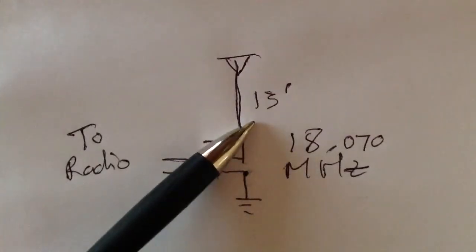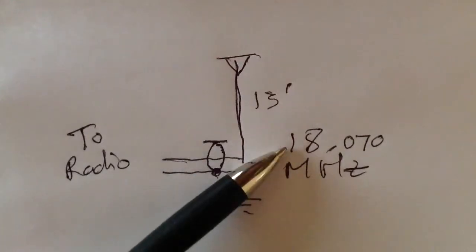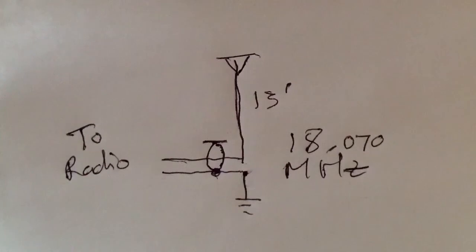The whip extended to 13 feet tall, according to the formula 234 divided by the frequency in megahertz. That would give you the number of feet. So I had a quarter-wavelength antenna, and I had an almost perfect match, an almost perfect one-to-one SWR.